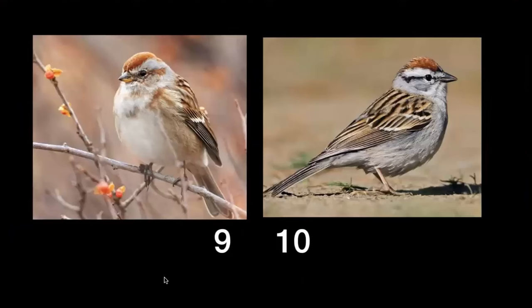Numbers nine and ten: one is a Chipping Sparrow, one is a House Sparrow. Remember — the House Sparrow has a white ring around the eye with a brown streak from eye to back of head. The Chipping Sparrow has a black line with no eyeliner.